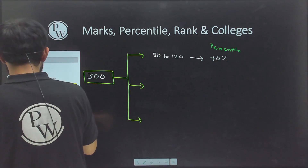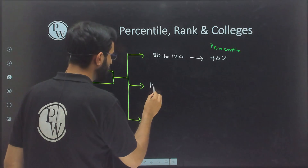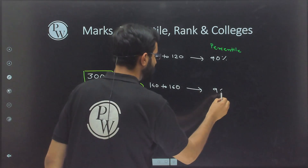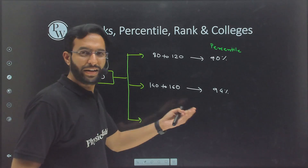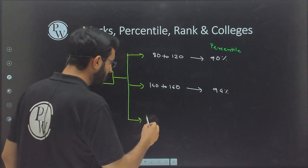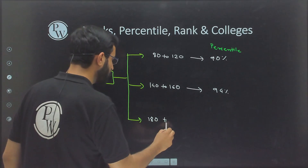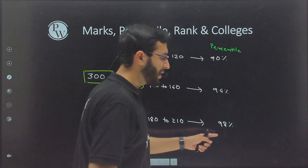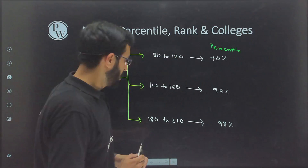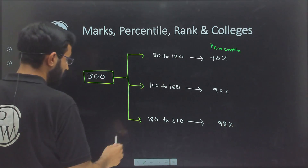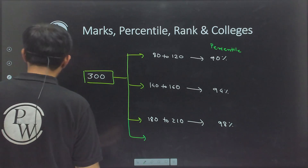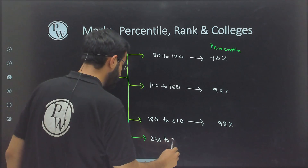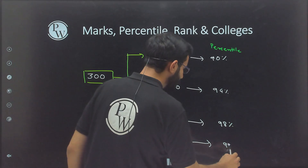If you are able to score 140 to 160 marks, you are going to score around 94 percentile — sometimes 93 or 95 depending on the paper. If you are scoring between 180 to 200, you are going to get approximately 98 percentile, with a rank of around 13,000 as per the last two years' data. If you score near 240 to 260, you will cross 99 percentile.